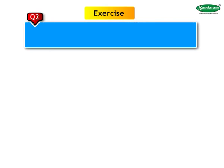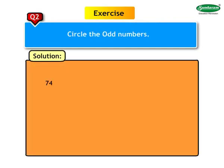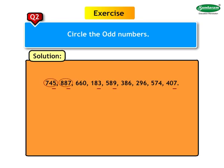Question 2: Circle the odd numbers from: 745, 887, 660, 183, 589, 386, 296, 574, 407. As the digit in the units place of 745, 887, 183, 589, and 407 are odd, these numbers are also odd. Therefore, 745, 887, 183, 589, and 407 are odd numbers.